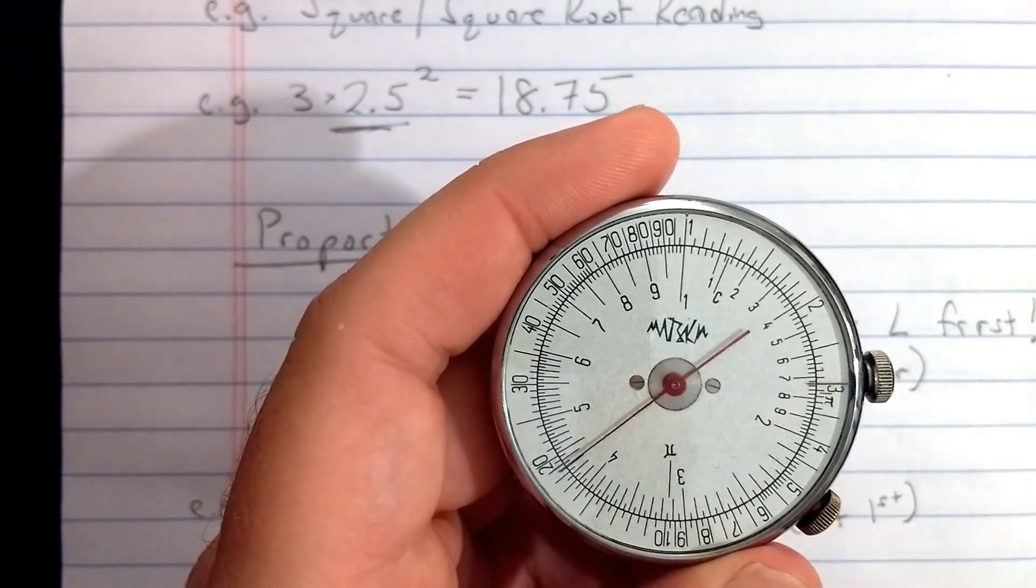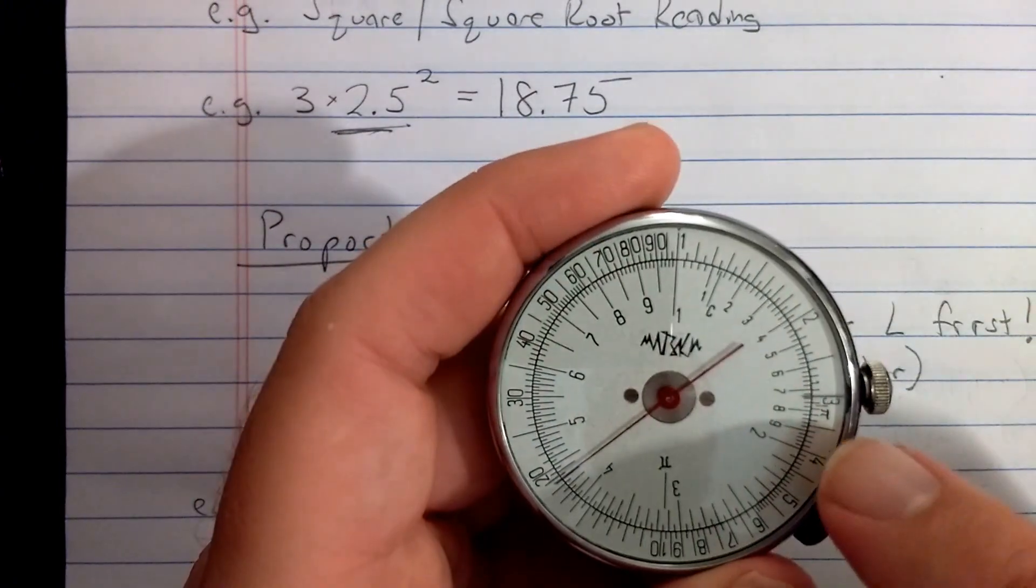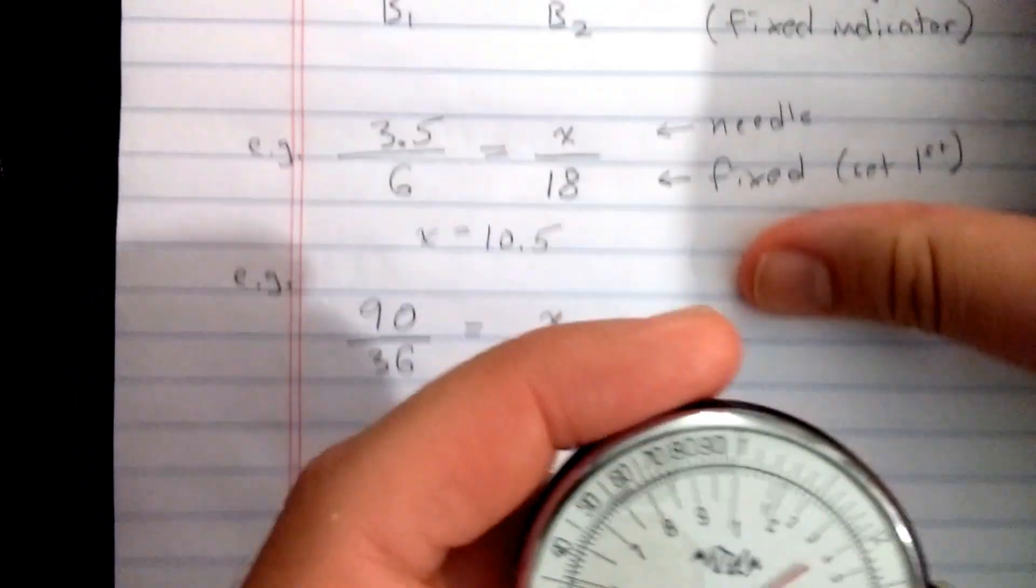And then I read result 18.75 on the outer scale. Very similar to how you would do it on a regular linear slide rule. Of course, instead of 3, if you use the pi indicator there on the outer scale, you can compute the area of a circle.